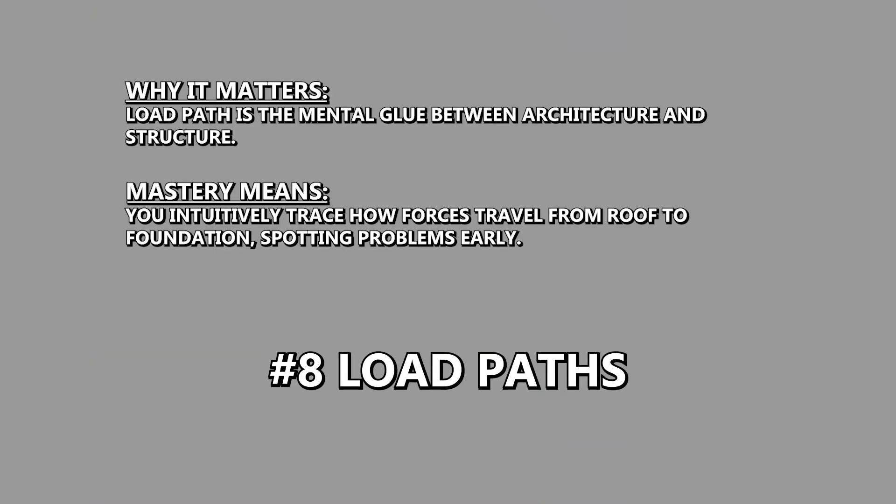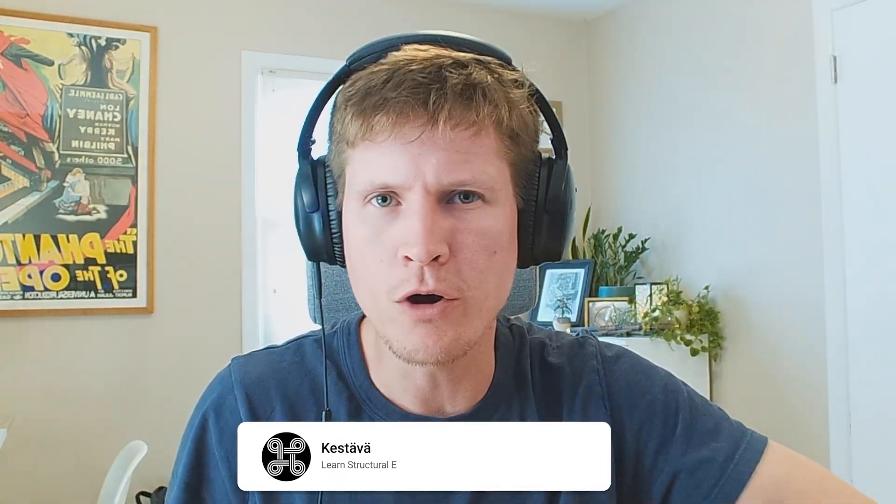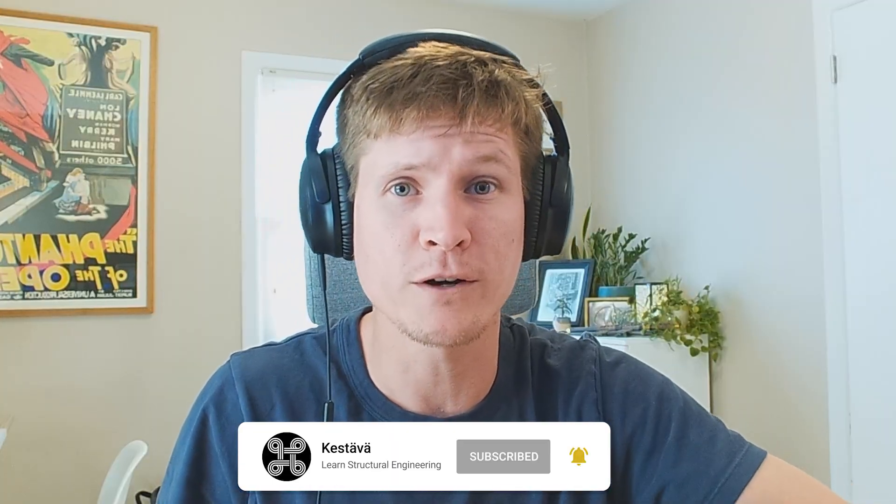In number eight, we have load paths. Every structural decision you make either completes or disrupts a load path. The best structural engineers resolve complex architectural designs with simple, effective structural solutions because they see the load paths clearly. Remember, loads are lazy — they want the easiest route to the foundation. Just because you can detail something complicated doesn't mean it's the best solution. Seeing how loads flow through a structure from roof down to the foundation, both vertically and laterally, helps you catch problems others miss. This skill gives you a pseudo-X-ray vision into a building's structure.